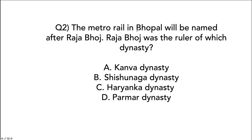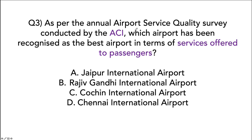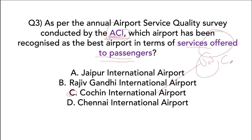The Metro Rail in Bhopal has been named after Raja Bhoj, who was from the Parmar dynasty. According to the Airport Council International Airport Service Quality Survey, the best airport in India in terms of services offered to passengers is the Cochin International Airport — which also won the UN Champions of the Earth Award.